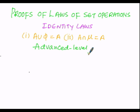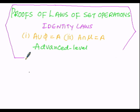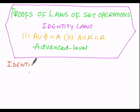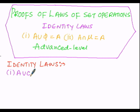In order to prove these conditions, we have to assume a set A, an empty set φ, and a universal set μ. The identity laws are: first, A union φ equals A, and second, A intersection μ equals A.